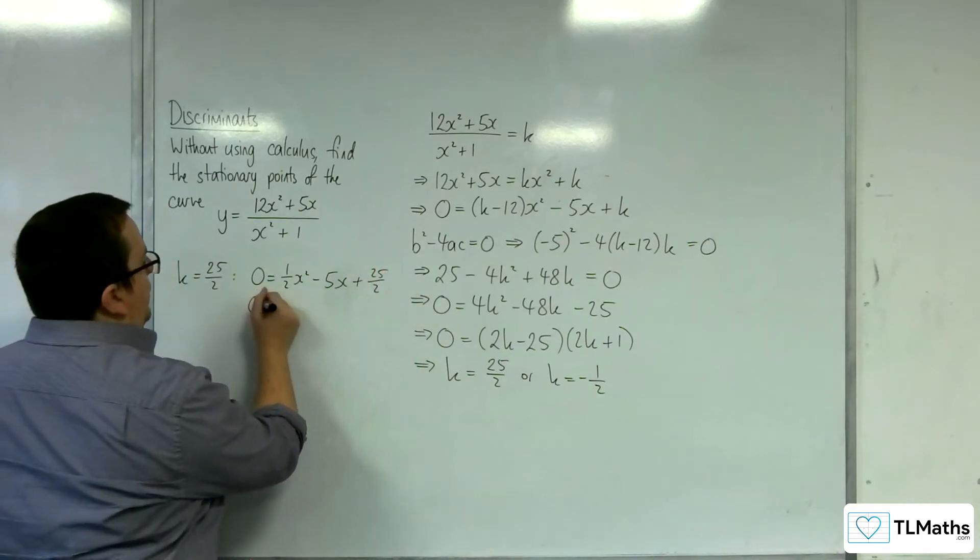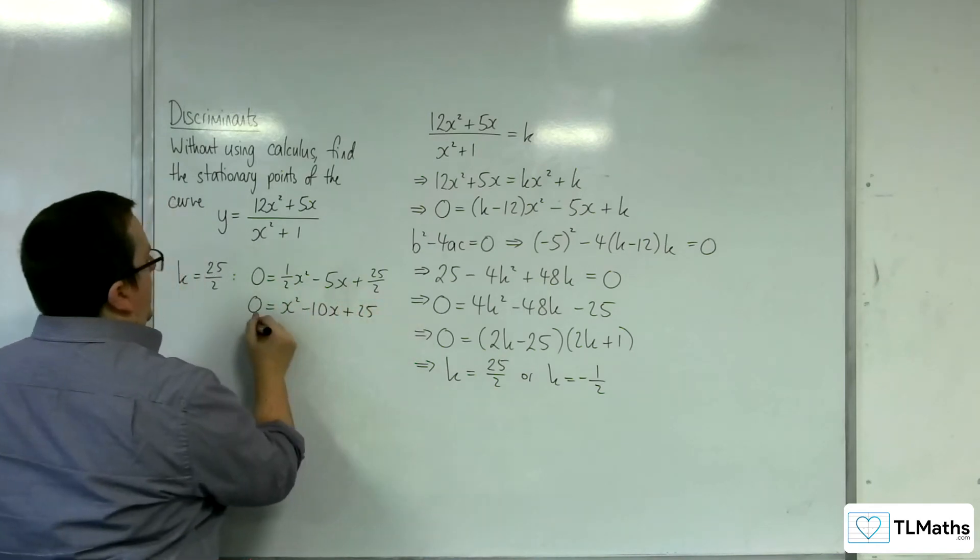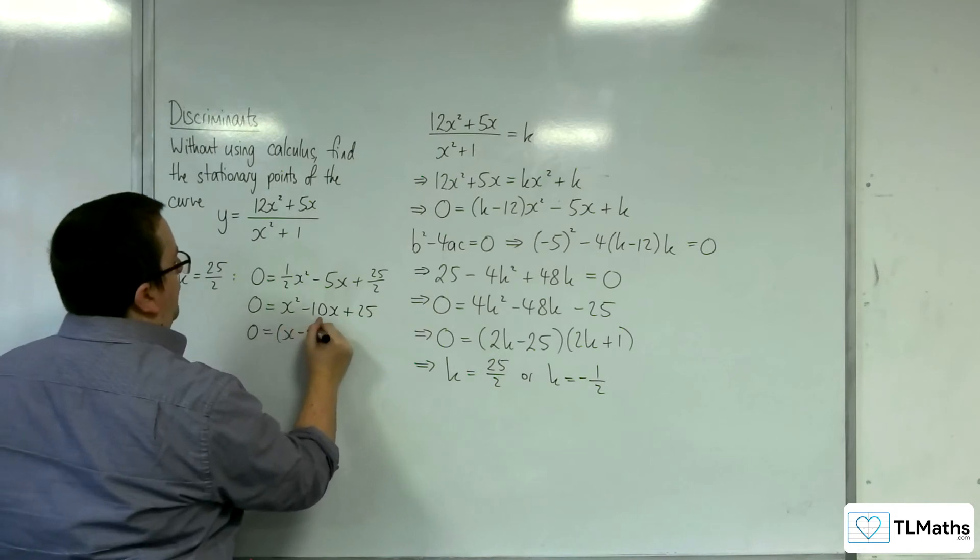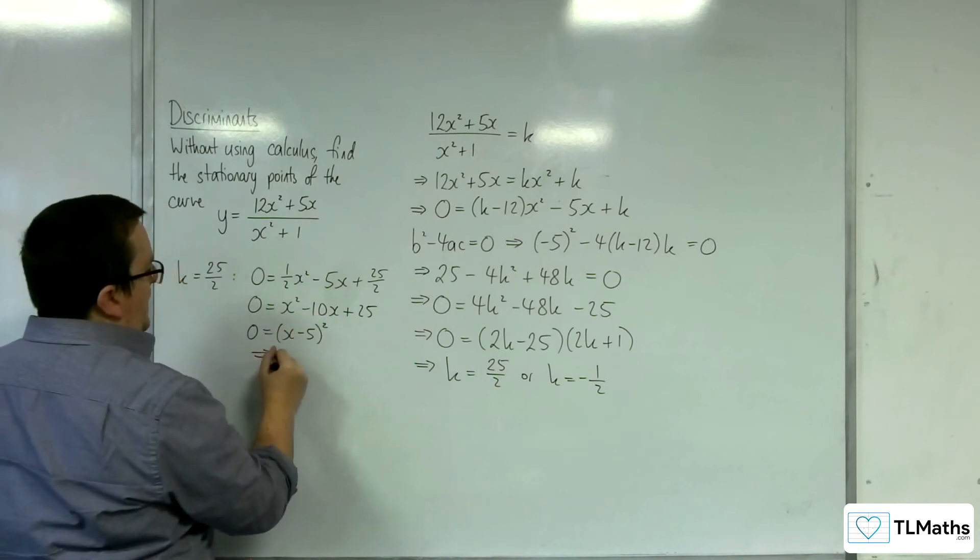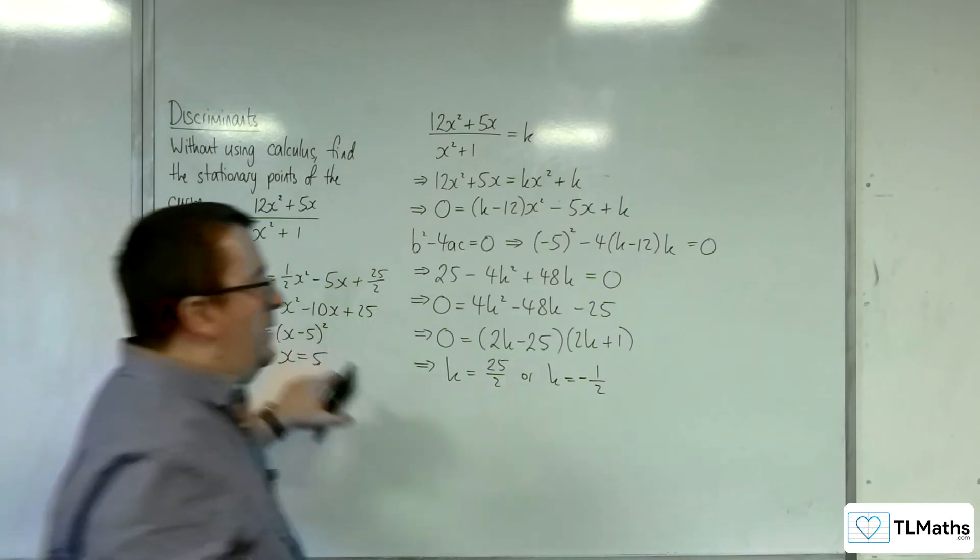Multiply through by 2, we get x squared take away 10x plus 25, and it's the perfect square of x take away 5 all squared. So that implies that x is equal to 5. So, there's a stationary point at 5, 25 halves.